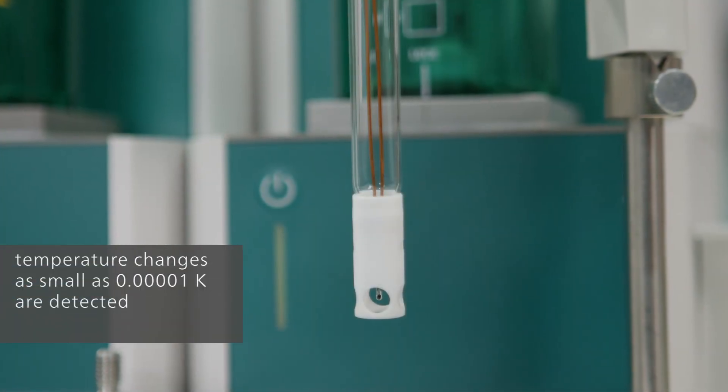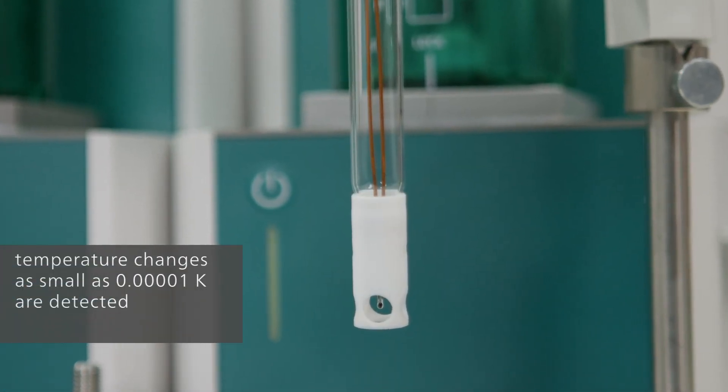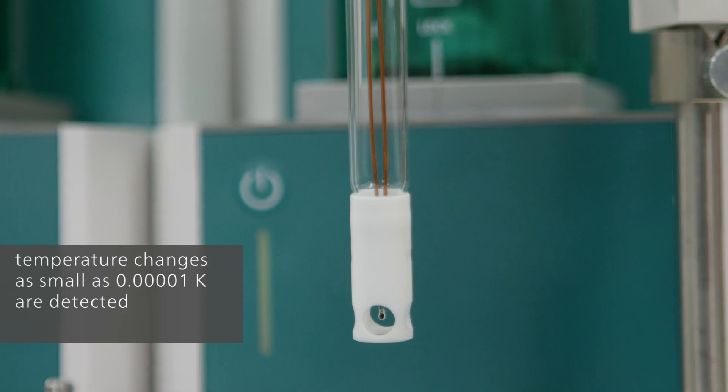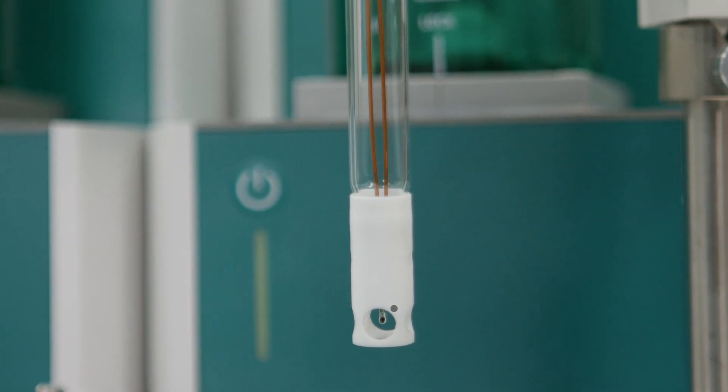Temperature changes as small as 0.00001 Kelvin can be measured with a Metrohm D-thermoprobe. This ensures extremely reliable endpoint detection.